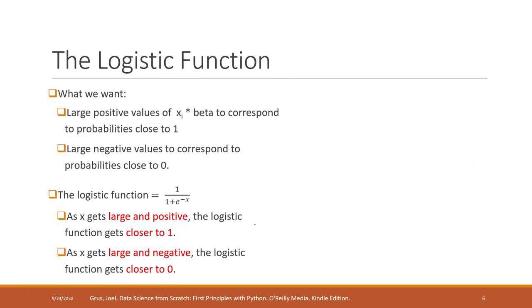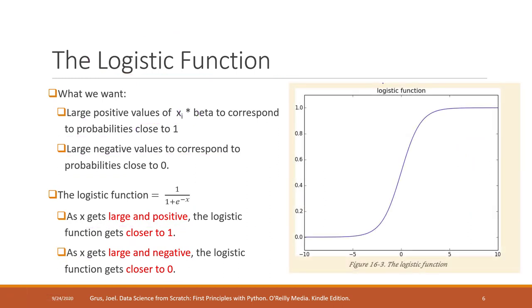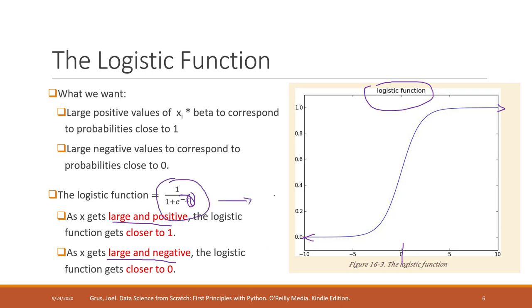If we put that on a visualization, that is what the logistic function looks like. It approaches 1 when the variable x gets large and positive, and approaches 0 when x gets large and negative. This function is perfect for calculating probability.